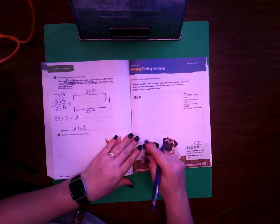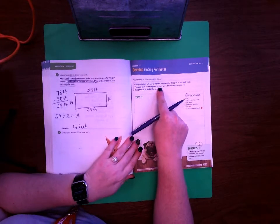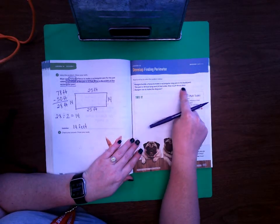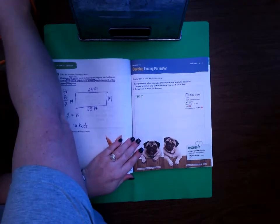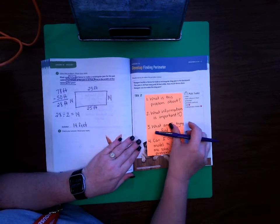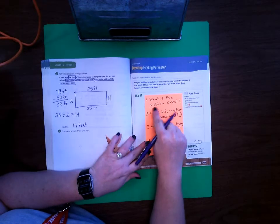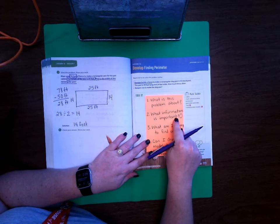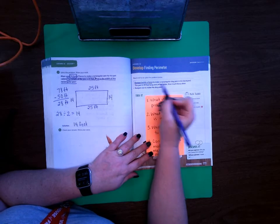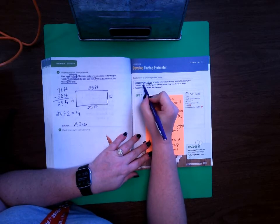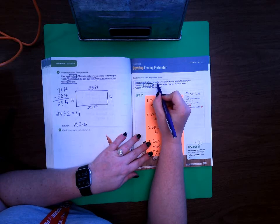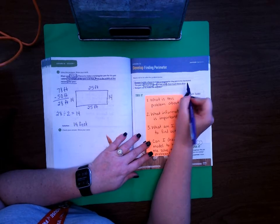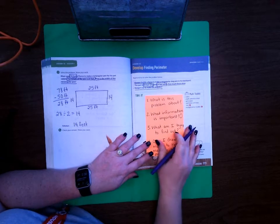Keegan builds a fence to make a rectangular dog pen in his backyard. The pen is 30 feet long and 24 feet wide. How much fence does Keegan use to make the dog pen? Well, I'm going to get my word problem card here. What is this problem about? It's about Keegan building a fence. What information is important? It's important to know that the pen is 30 feet long and that it's 24 feet wide. What am I trying to find out? I'm trying to find out how much fence does Keegan use to make the dog pen.